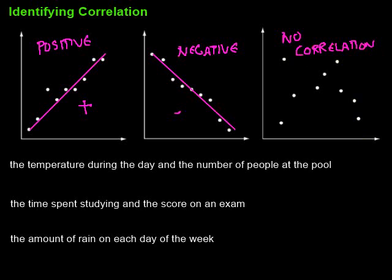So now let's take a look at a few situations and see if we can identify what type of correlation might exist in those situations. This first one: the temperature during the day and the number of people at the pool. So if the temperature is low, and let's just use this one as an example, we'll just kind of work on here.